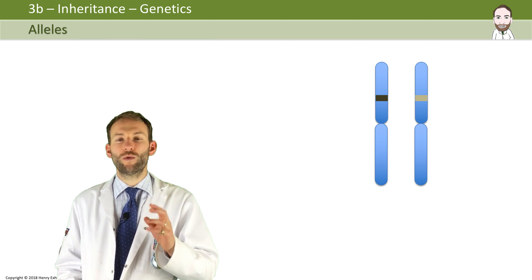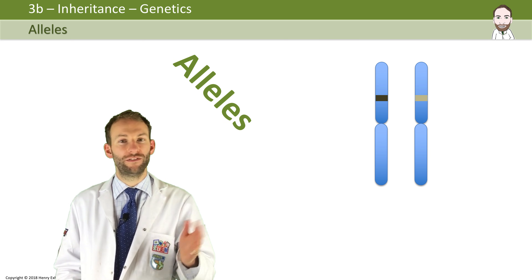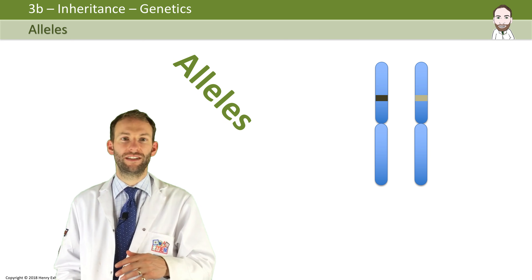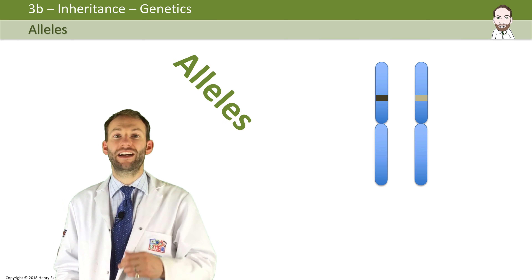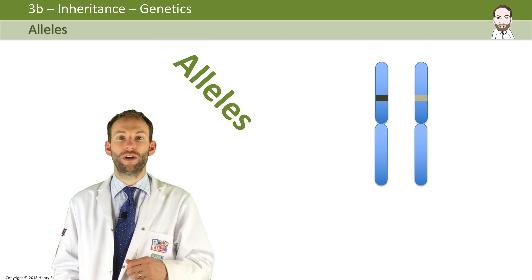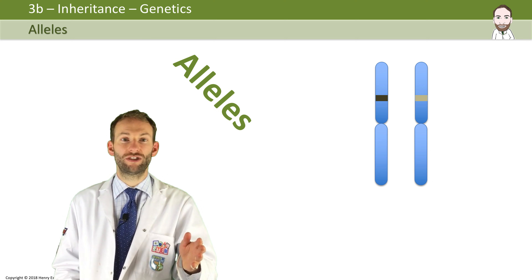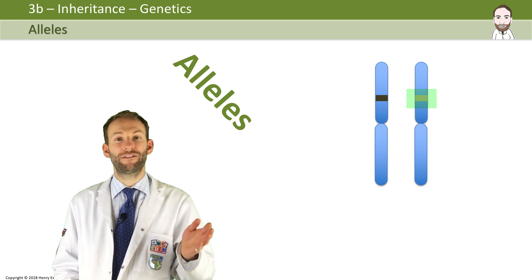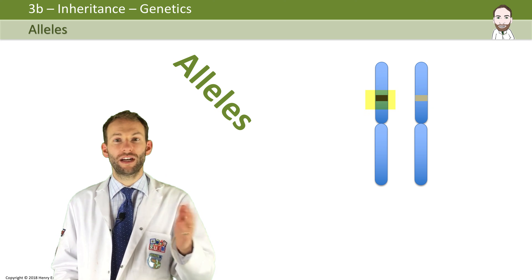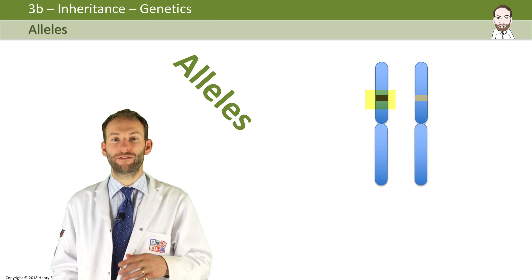These are what we call alleles — these copies of genes, two versions of genes. So the gene may code for hair colour, for example, but you could have a different allele for that gene from each of your parents. One for blonde colour, maybe from your mother, and one for brown from your father.